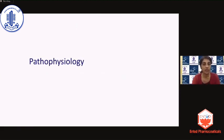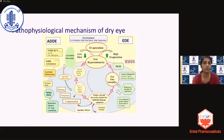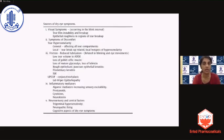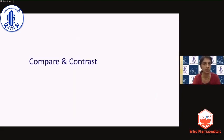This brings us to a couple of slides on the pathophysiology of dry eye disease, wherein TFOS has been advocating through both its reports that whether it is aqueous dry eye or evaporative dry eye, the one final common pathway of dry eye disease is tear hyperosmolarity, which leads to the other effects and manifestations seen in these patients. Also very beautifully elaborated in this report are the various sources of dry eye symptoms and the causes for each symptom these patients present with.